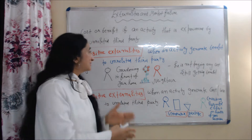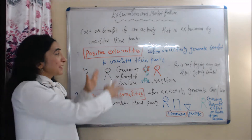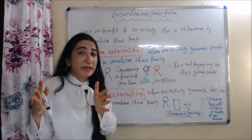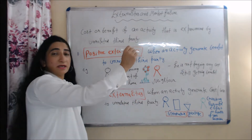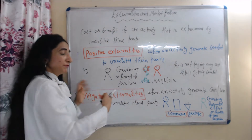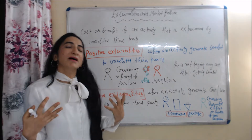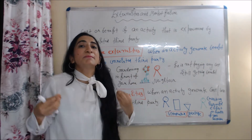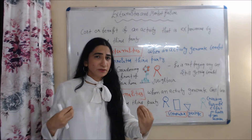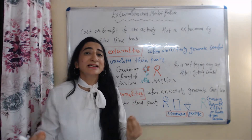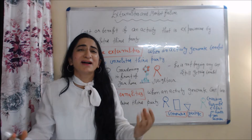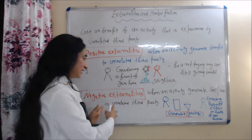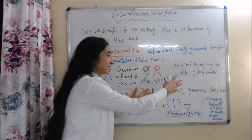Externalities can be positive or negative. Positive externalities means when an activity generates a benefit to an unrelated third party. For example, when you are gardening in front of your home, your neighbor is also getting a benefit. Your neighbor is not paying any cost but still getting benefit from your gardening. That's called positive externalities.